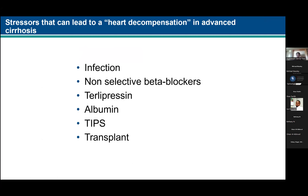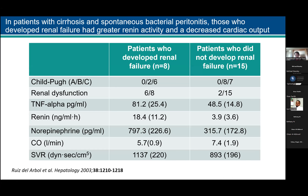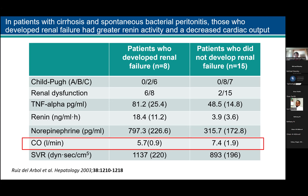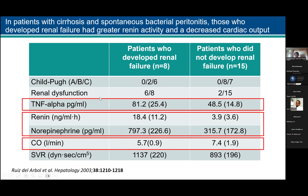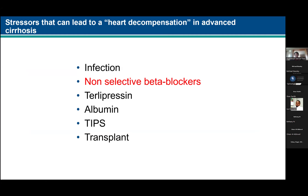Let me tell you what stressors lead to heart decompensation in advanced cirrhosis — we're talking mostly about decompensated patients. Infection, for example: patients with ascites can develop spontaneous bacterial peritonitis. Those who developed renal failure with infection had a lower cardiac output but were more activated in renin and norepinephrine. They had more inflammation — higher TNF-alpha — but decreased cardiac output. So the infection itself, with these high inflammatory markers, led to cardiac dysfunction.